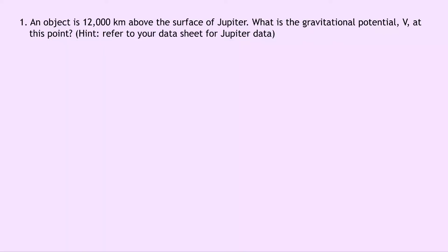Question 1 says that an object is 12,000 kilometers above the surface of Jupiter. What is the gravitational potential V at this point? A hint is to refer to your data sheet for the Jupiter data. Writing down what we know from the question, we're trying to find gravitational potential V. We know the universal constant of gravitation G is 6.67 times 10 to the minus 11 meters cubed per kilogram per second squared.